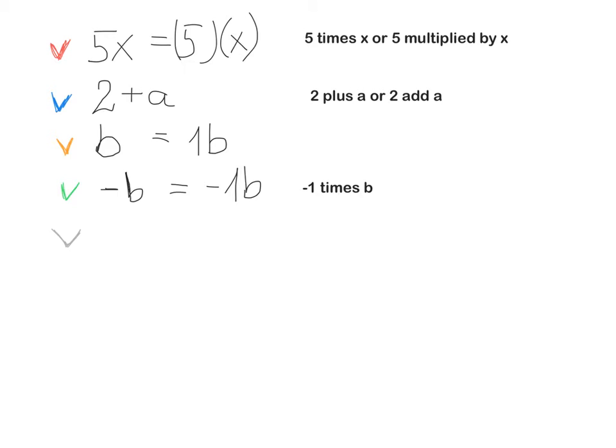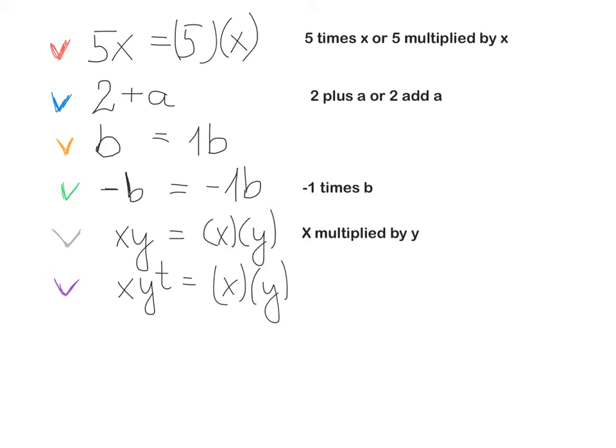The next one, let's say it's xy. xy means x multiplied by y, and we can also write it down in brackets: x multiplied by y. The next one, let's say we have 3 letters: xyt. This is the same as x multiplied by y multiplied by t.